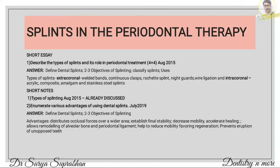Coming to the next — splints in periodontal therapy. Describe the types of splints and their role in periodontal therapy. Write what is a dental splint, mention at least 2–3 objectives of splinting, then classification and uses. Types: extra-coronal — welded bands, continuous clasp, Rochette splint, and night guards — or intracoronal — acrylic, composite, amalgam, and stainless steel splints. Write 2–3 lines about each. Then enumerate various advantages of using dental splints.